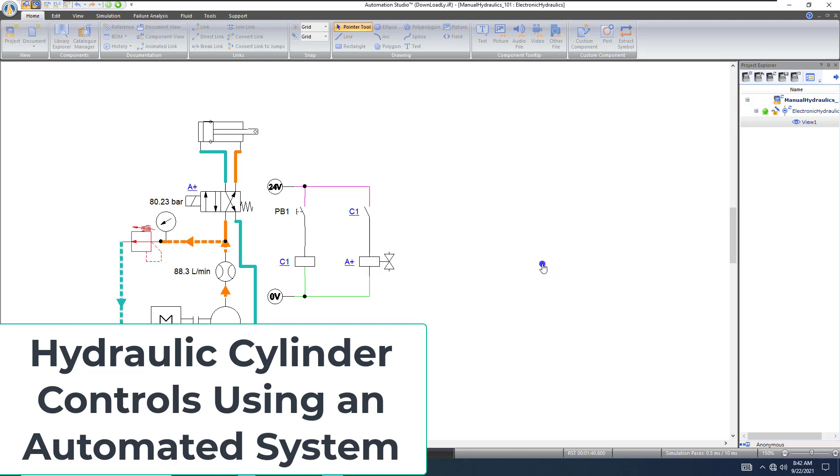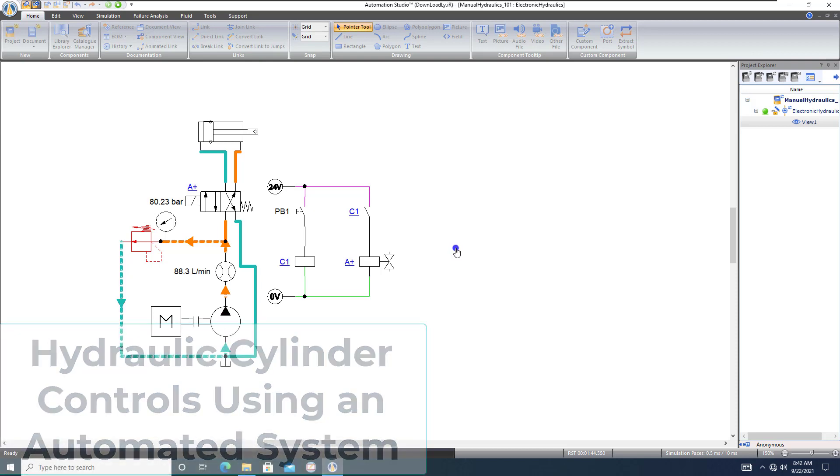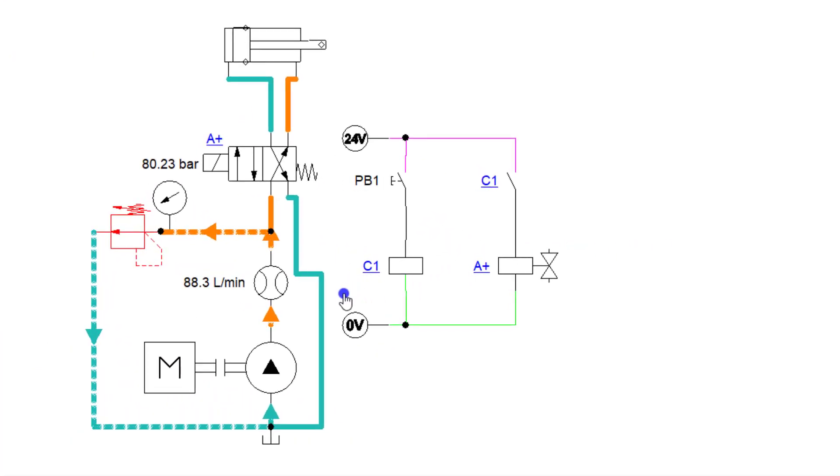Alright, so in this video we have some hydraulic controls that will be controlling a solenoid, a hydraulic solenoid that actually has all of the fluid piping and everything done through a 24 volt system basically going through a push button.